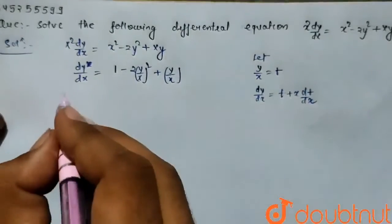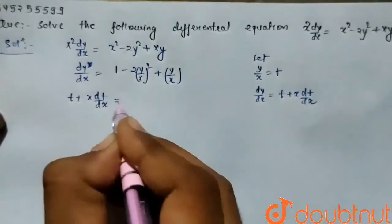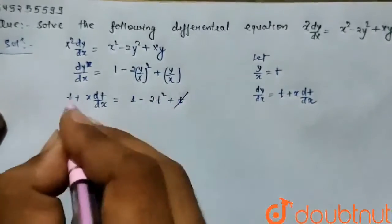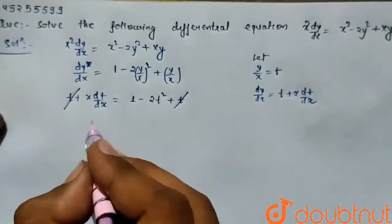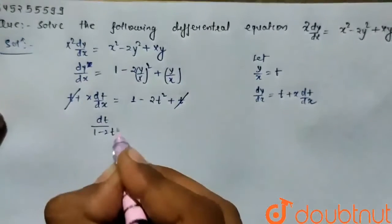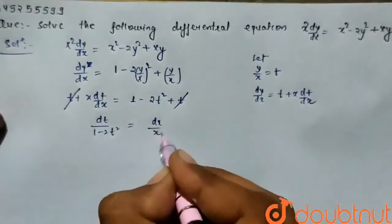Then dy by dx equals t plus x dt by dx. So on putting that values, t plus x dt by dx equals 1 minus 2t square plus t. This t cancels with this t. Here dt by 1 minus 2t square equals dx by x.